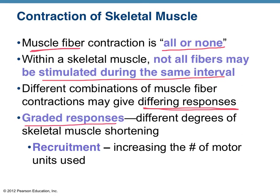It should make sense that the more motor units involved in an action, the more strength, torque, and power you get from a muscle contraction. If in your bicep you had 10 motor units causing the contraction versus 100 motor units involved, you should have a much stronger degree of shortening — it's like a tug-of-war contest with either two people on one side or 100 people pulling in the same direction. The increasing number of motor units used is called recruitment.